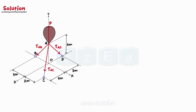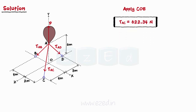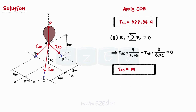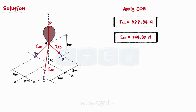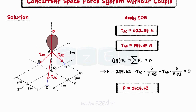Since this system is in a state of equilibrium, we will now apply the conditions of equilibrium. We first equate the summation of all forces along the x direction to zero. On simplifying, we find tension in cable AC equal to 622.34 N. Next, on equating summation of all forces in the z direction to zero, we find tension in cable AD equal to 744.37 N. Similarly, when we equate summation of all forces in the y direction to zero, we get the vertical force exerted at the base of the balloon, P equals 1414.43 N.